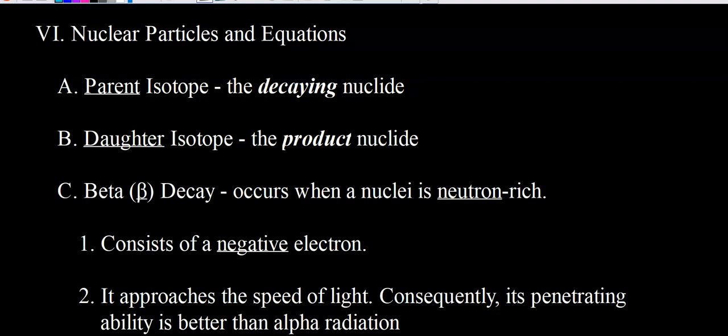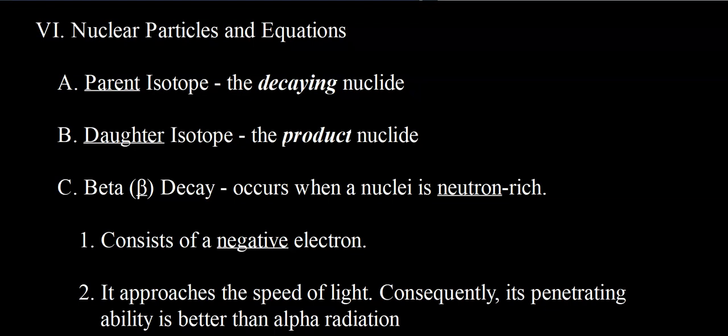A beta particle is basically an electron — it has the same properties as an electron. You might be thinking: there are no electrons in the nucleus, so how can the nucleus emit an electron? Well, this beta particle is produced by something in the nucleus — either a proton or a neutron — and it turns into a beta particle along with something else, and that beta particle is emitted, kicked out of the nucleus. It has the same mass and charge as an electron: no mass and a charge of negative one.